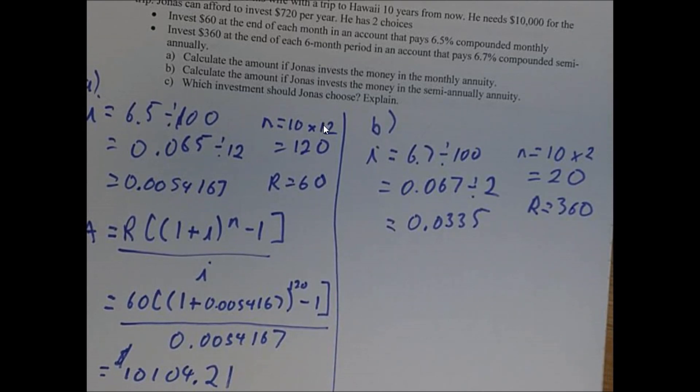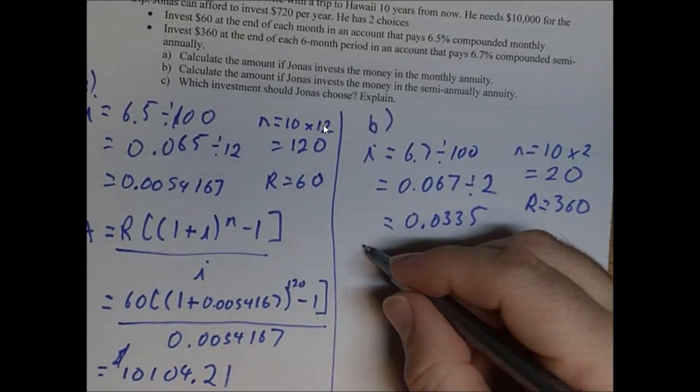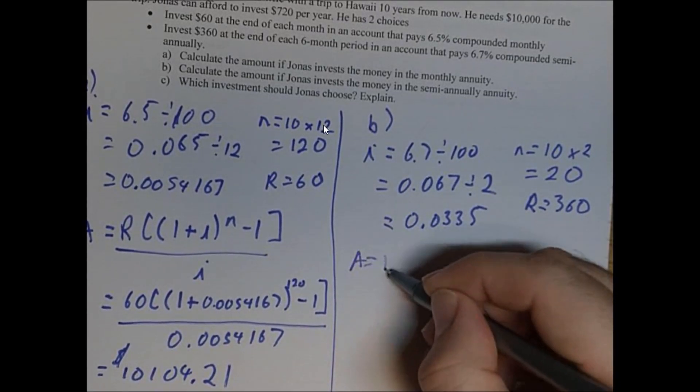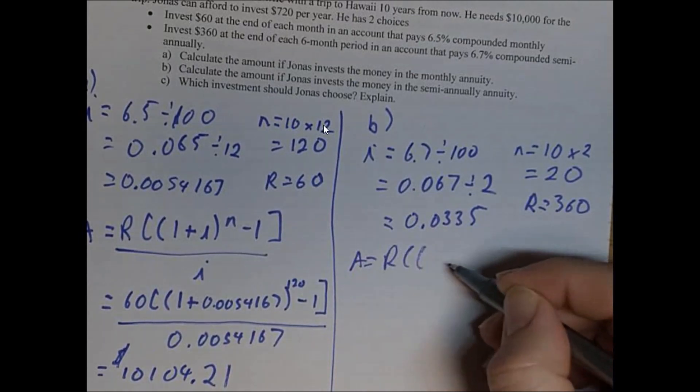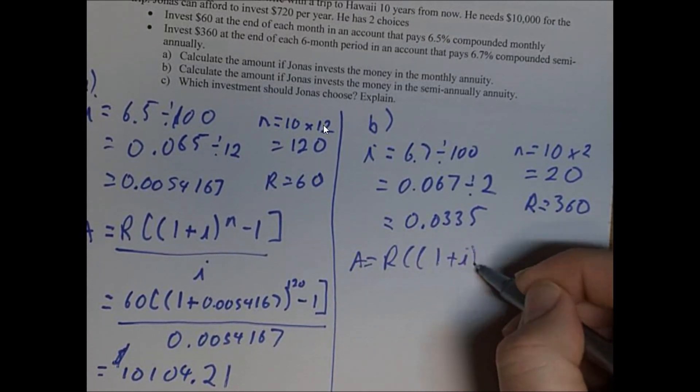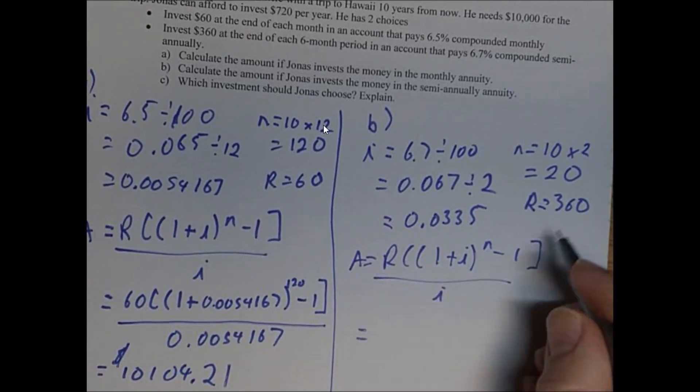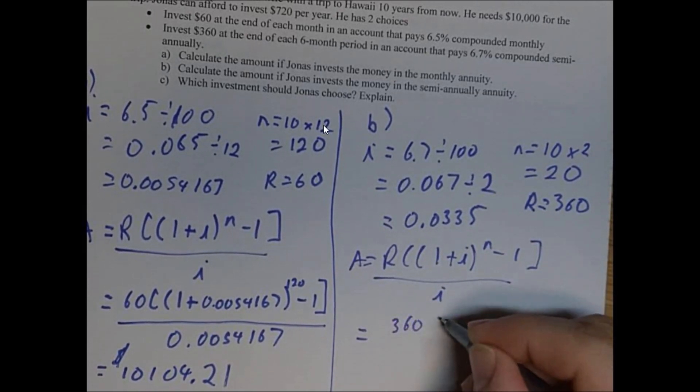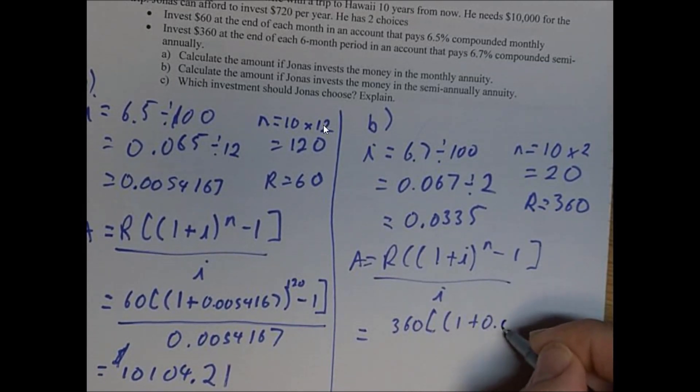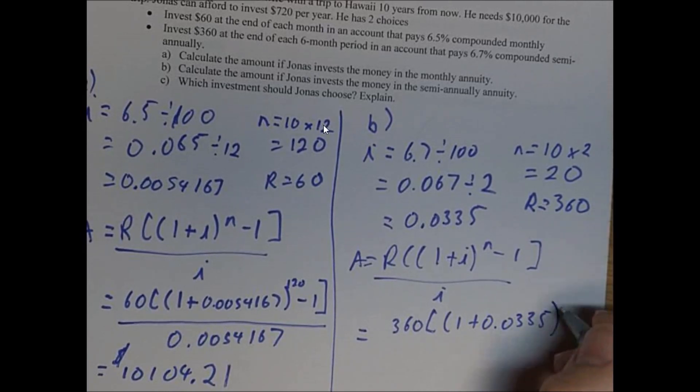Now we're going to put all that into the formula. So A equals R bracket, bracket one plus I to the N minus one, all over I. So let's see R 360 bracket, bracket one plus 0.0335 to the power of 20.